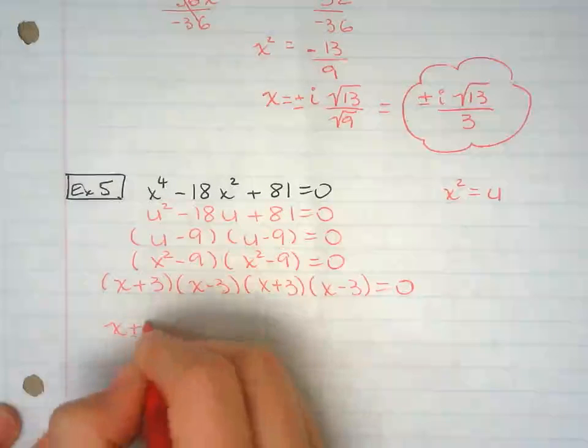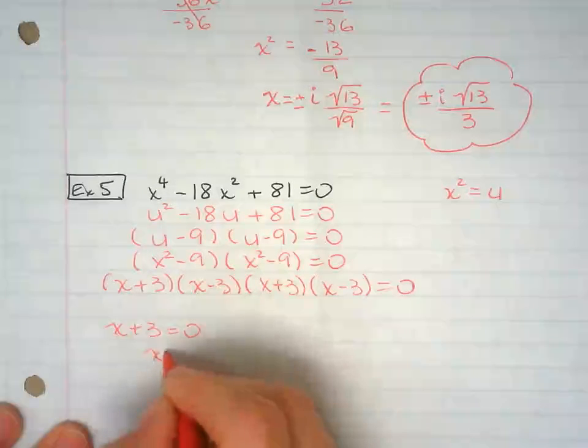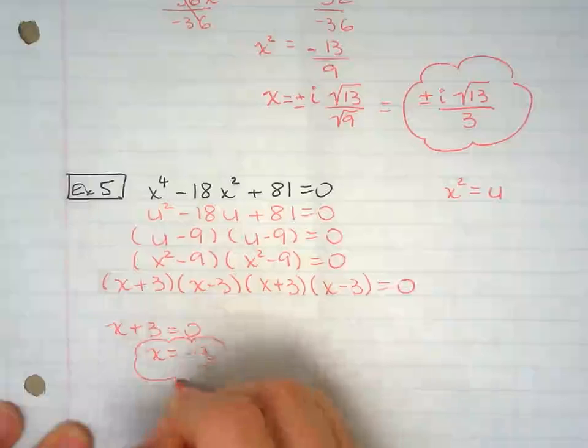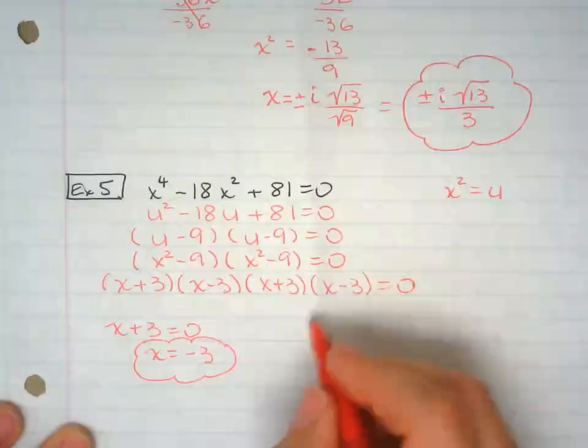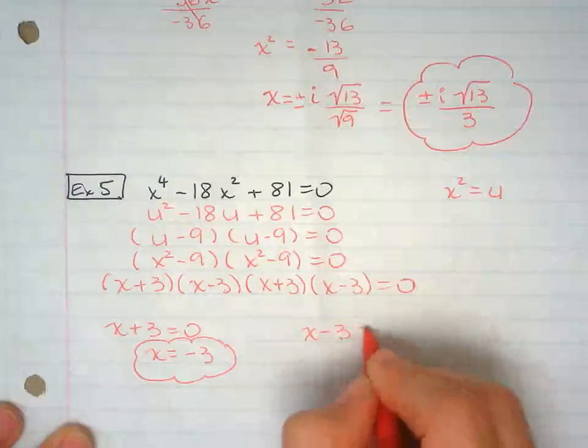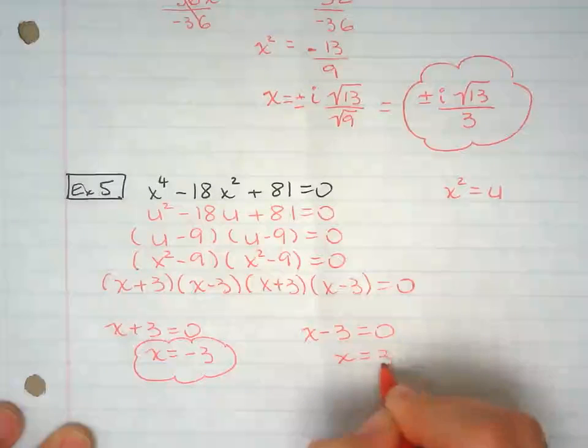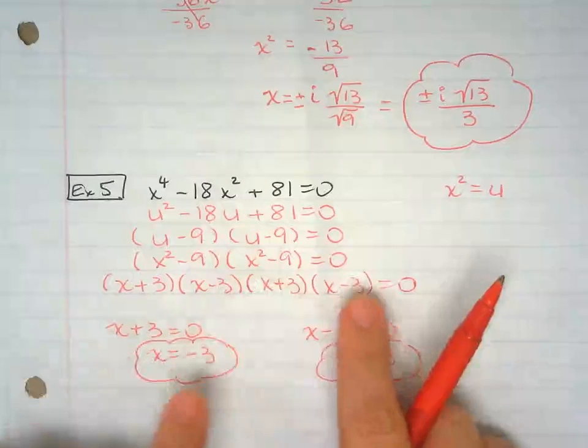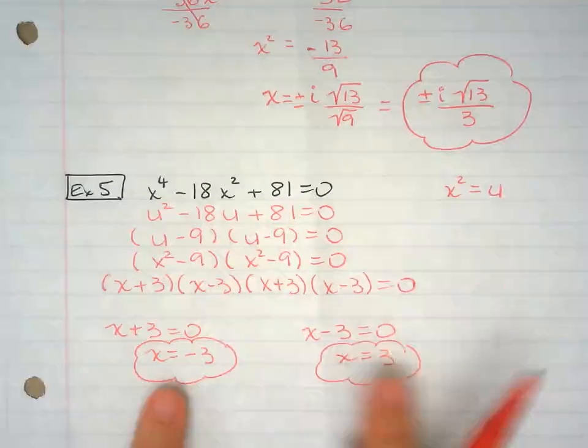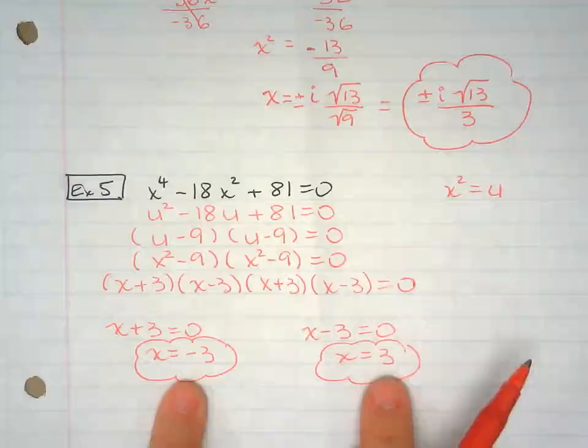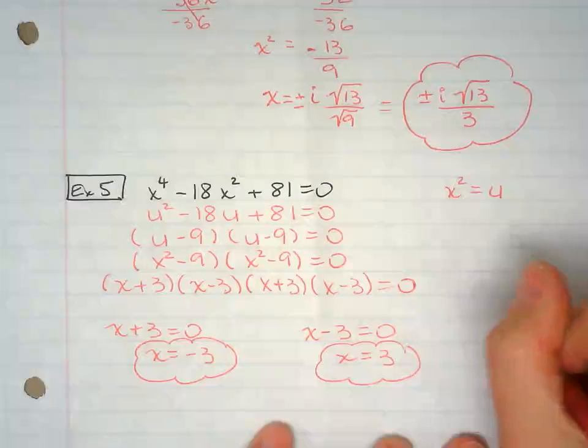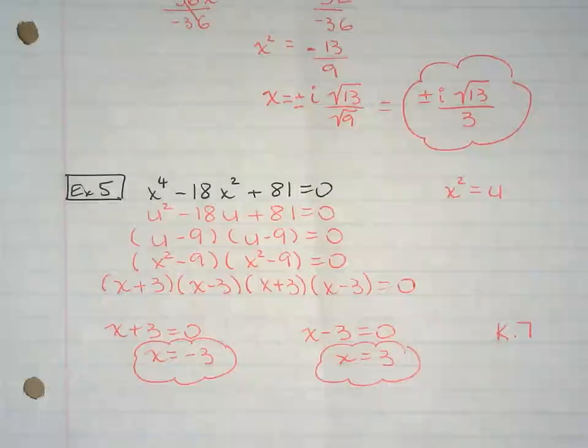So x plus 3 equals 0, minus 3 from both sides. I have x equals negative 3. And I'm going to set up the other one equals 0, plus 3 on both sides. And I know that the other two are the same, so I don't have to do them again. So I only have two answers, not four. If they were different, then I would have to write them all up, but they're the same, so I don't have to repeat myself. So now we're doing IXL-K7. Thank you.